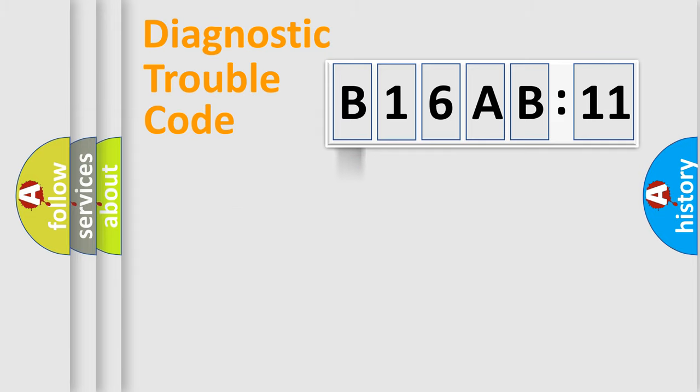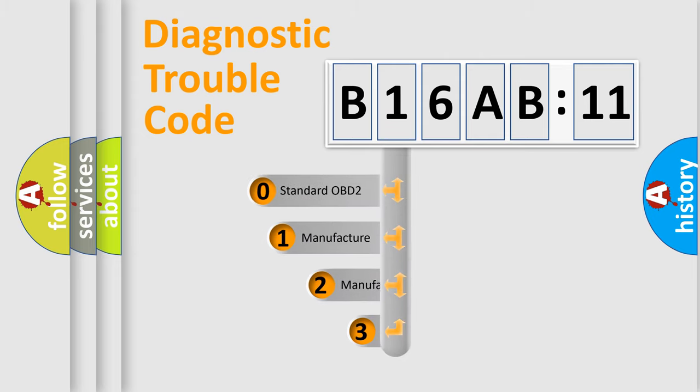Powertrain, body, chassis, network. This distribution is defined in the first character code.